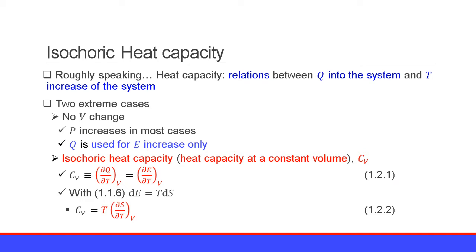From equation 1.1.6, the differential of the internal energy E is equal to the temperature T times the differential of the entropy S, and this leads to Cv expressed as T times the partial derivative of entropy S with respect to temperature T at constant volume V. Equation 1.2.2.